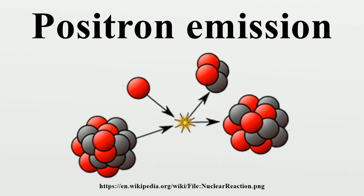Emission mechanism: Inside protons and neutrons, there are fundamental particles called quarks. The two most common types of quarks are up-quarks, which have a charge of +2/3, and down-quarks, with a charge of −1/3. Quarks arrange themselves in sets of three to make protons and neutrons. In a proton, whose charge is +1, there are two up-quarks and one down-quark. Neutrons, with no charge, have one up-quark and two down-quarks.